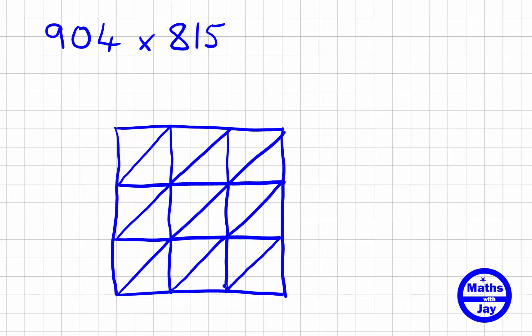That's our lattice sorted out. Now we write down one of the numbers across the top. I'm going to put 904 across there, but it doesn't matter which one goes where, so long as we put it in the right direction. They're going from left to right, and then the other number down the right hand side, starting at the top and writing it down like that. Then we're going to do a bit of multiplying.